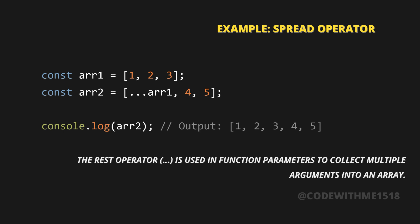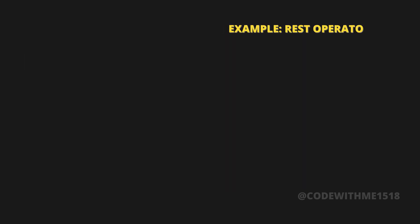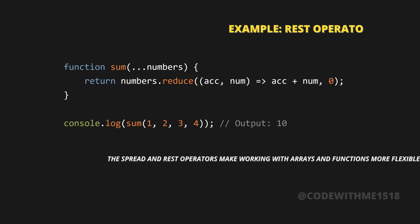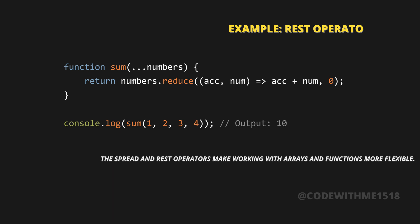The rest operator is used in function parameters to collect multiple arguments into an array. For example: function sum(...numbers) { return numbers.reduce((acc, num) => acc + num, 0); } console.log(sum(1, 2, 3, 4)); — Output: 10. The spread and rest operators make working with arrays and functions more flexible.